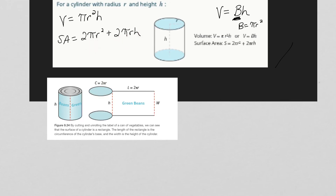For 2πrh: 2πr is your circumference — the length around the circle. But then you need the area of the rectangle formed by the side, so that's why you multiply by h, the height of the can. The first part is the area of the two circles, and the second part is like the area of a green bean label on the can.